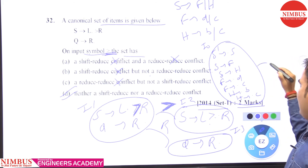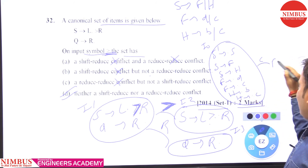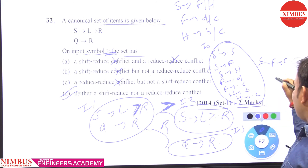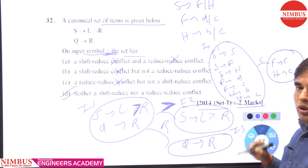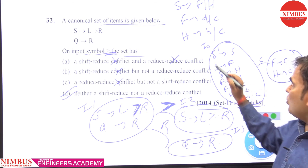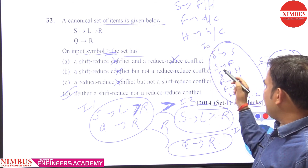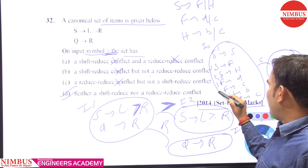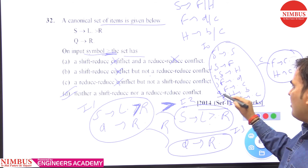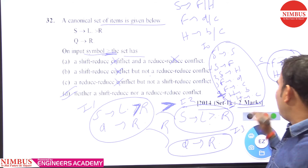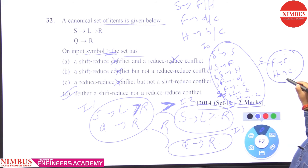When we give the input c, we get: F tends to c dot, H tends to c dot, and S tends to c dot. Numbering the productions 1 through 6, both the 4th and 6th productions are reducing in the same state of the canonical set of items — in the same state.